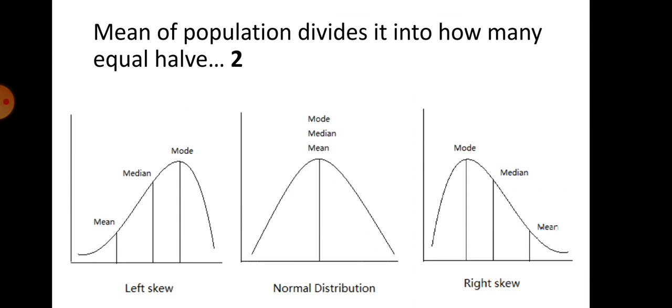The mean of a population divides it into two equal halves — the central peak depicts this. In normal distribution (left skewed, right skewed, or symmetrical), the mean of the population divides it into two equal halves. In normal distribution, the mode, median, and mean are all the same, whereas they are different in right and left skewed distributions.